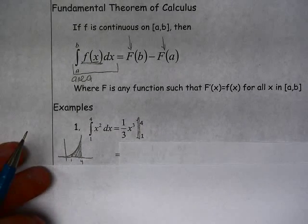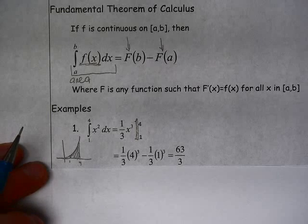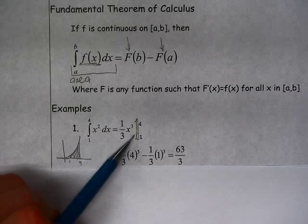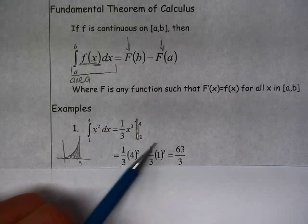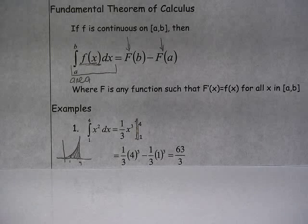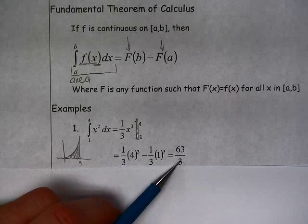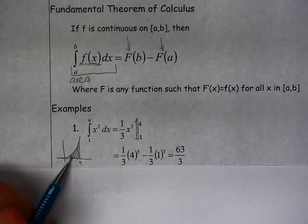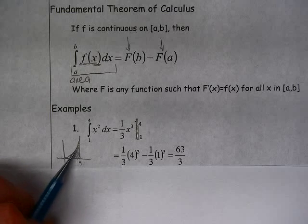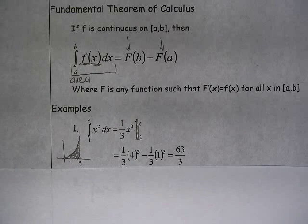So the notation we use is you can either use a bracket or if we're handwriting it, sometimes it's just a straight line, the lower limit and the upper limit. And so what that means is this antiderivative evaluated at 4 minus this antiderivative evaluated at 1. And when we simplify that out, we get 63 thirds. So 63 thirds square units is the exact area that is found underneath the graph of x squared above the x-axis and between x equals 1 and x equals 4.